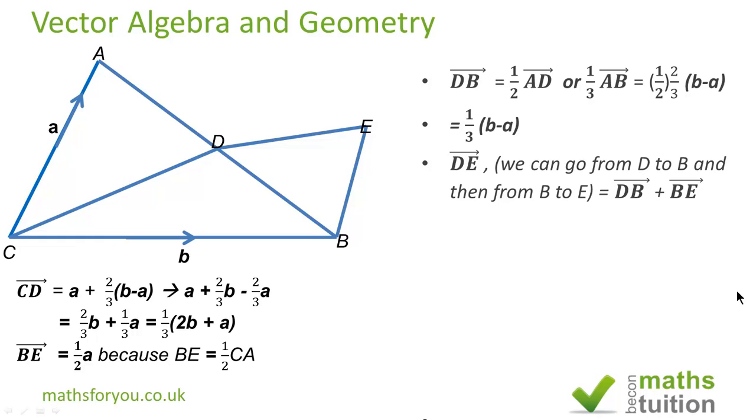Next DE. We can go from D to E by going from D to B and then B to E. Vector DB from above is 1 third into (b minus a) and Vector BE is a half of a, and combining we have a third into (b minus a) plus half a.